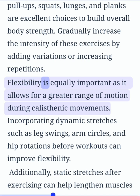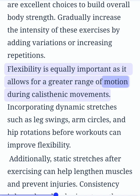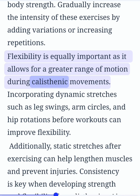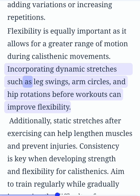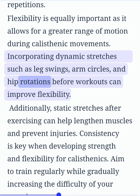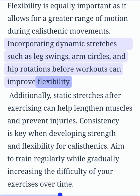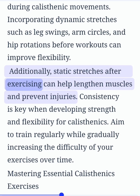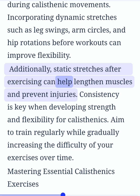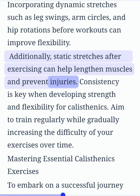Flexibility is equally important as it allows for a greater range of motion during calisthenic movements. Incorporating dynamic stretches such as leg swings, arm circles, and hip rotations before workouts can improve flexibility. Additionally, static stretches after exercising can help lengthen muscles and prevent injuries.